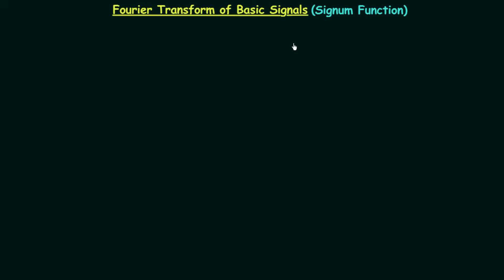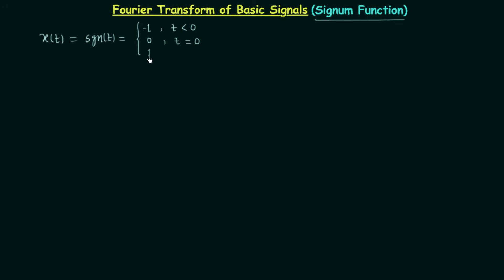In this lecture we will calculate the Fourier transform of the signum function. Our time domain signal x(t) is equal to the signum function, which equals minus 1 when t is less than 0, equals 0 when t equals 0, and equals 1 when t is greater than 0. We want to calculate its Fourier transform, which we call X(ω).